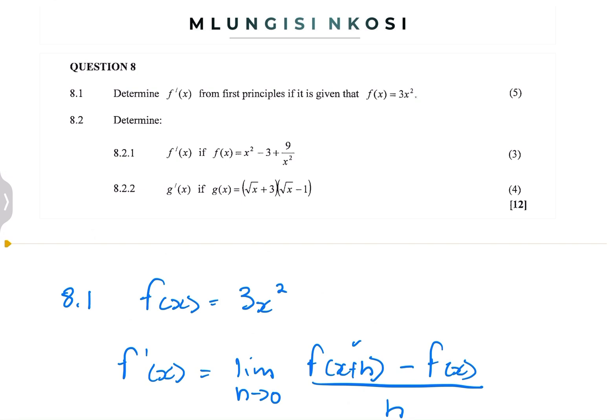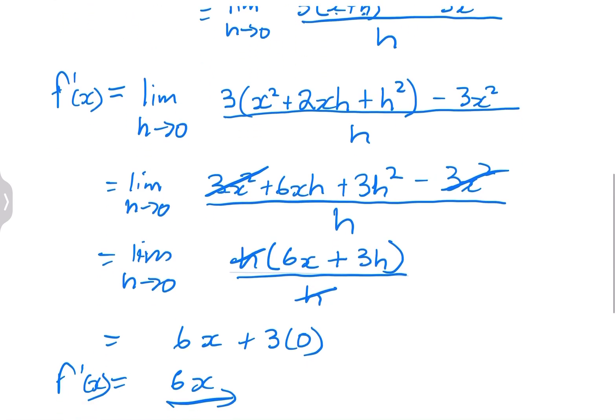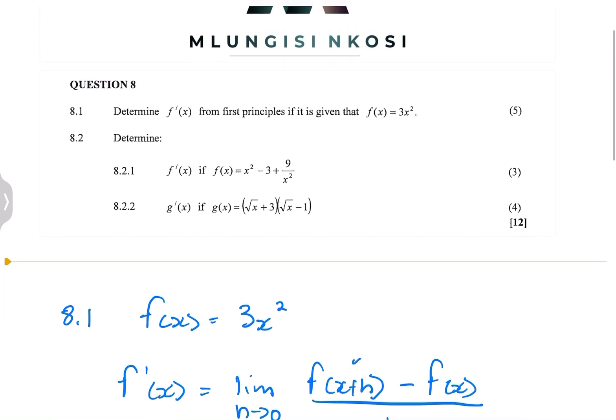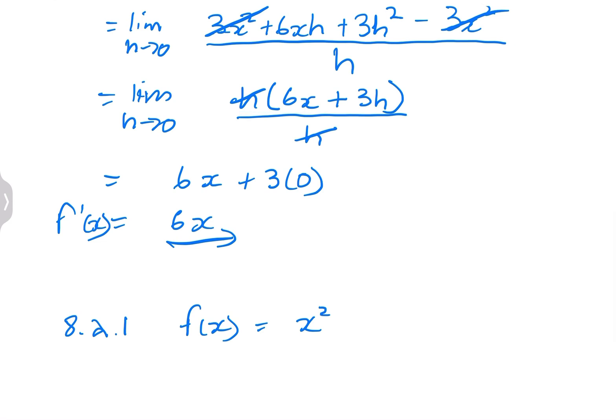So the next question, they say determine f prime x if f(x) is x squared minus 3 plus 9 over x squared. So remember, the first thing that we always need to do is make sure that we get rid of anything that will get in our way. So we remove everything that has to do with the fractions, brackets.